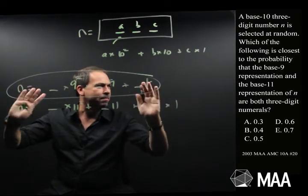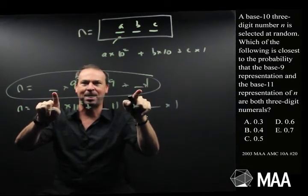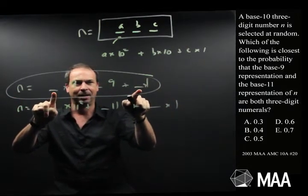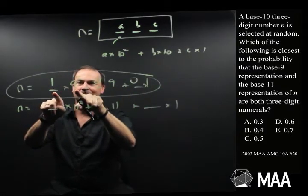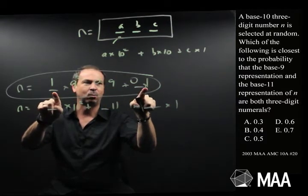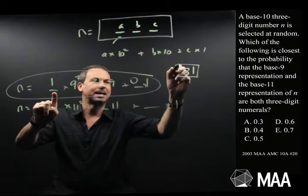I want the base-9 representation to be three digits. So, what's the smallest base-9 representation I could have? Well, I guess it would be a 1 there, and a nothing there, and a nothing there. So, that would be 1 times 81, plus no 9s, plus 1. So, the smallest number with three digits in base-9 is 81.